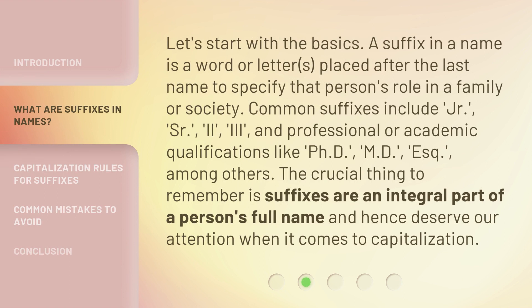Let's start with the basics. A suffix in a name is a word or letters placed after the last name to specify that person's role in a family or society. Common suffixes include Junior, Senior, II, III, and professional or academic qualifications like PhD, MD, and Esq., among others. The crucial thing to remember is suffixes are an integral part of a person's full name and hence deserve our attention when it comes to capitalization.